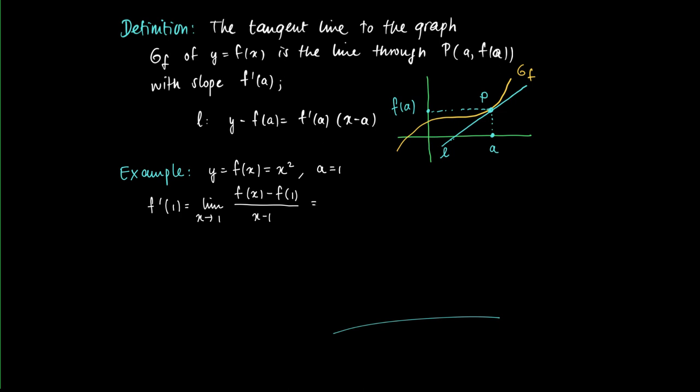Then this of course again equals the limit of x to 1 of x squared minus 1 divided by x minus 1. And x minus 1 may be taken out as a factor so we get as a limit x to 1 of x plus 1, so we get as a derivative the value 2.